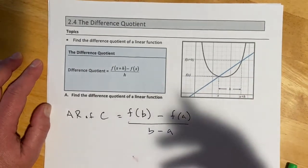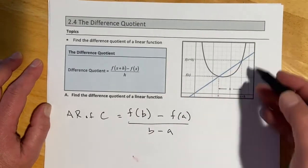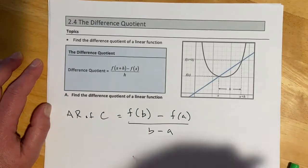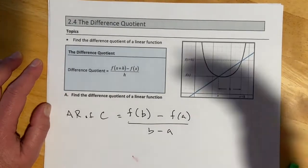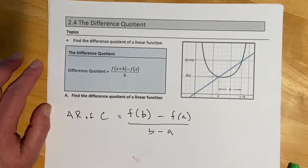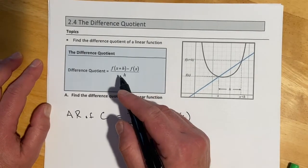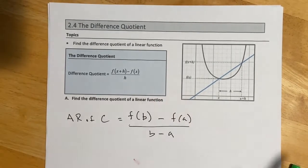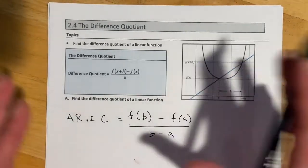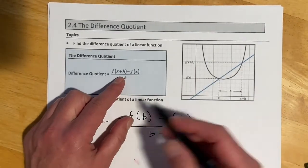So this will show up again and again. Today we're just going to look at it in the case of a line, which is about the least interesting version there is. And we're going to see it's just going to be slope again, much like average rate of change and much like 2.1 where we did slope.